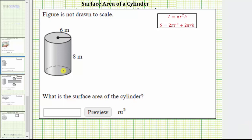We're asked to find the surface area of the cylinder. The surface area of the cylinder is equal to 2πr² + 2πrh, where r is the radius and h is the height.